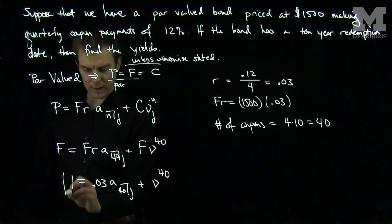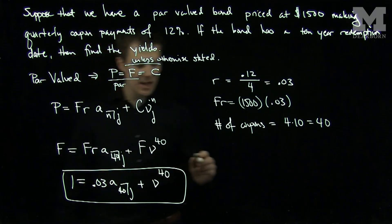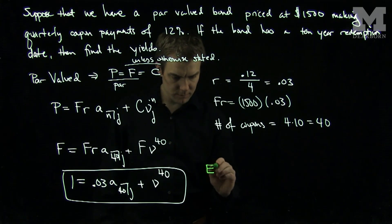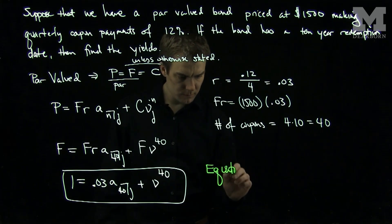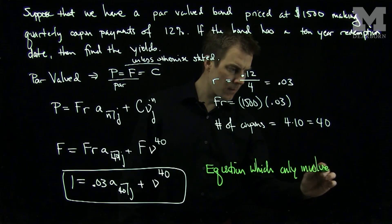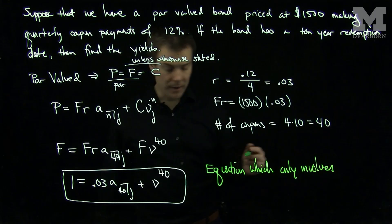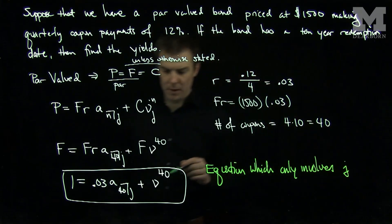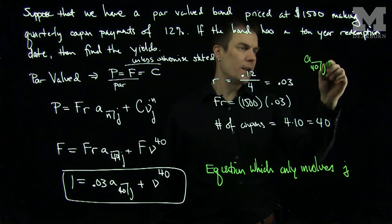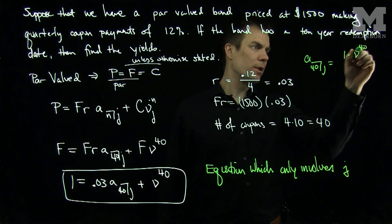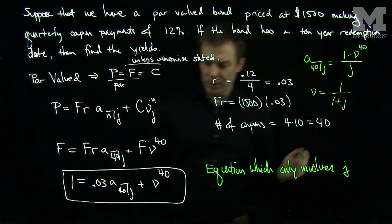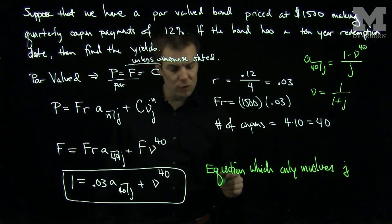And this equation over here is now an equation that only involves J. Indeed, we know that A bracket 40 J is 1 minus nu to the 40 over J. And nu is 1 over 1 plus J, so this equation only involves J, and it can be solved numerically.